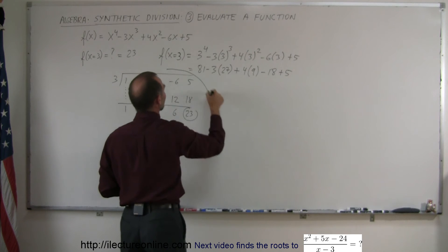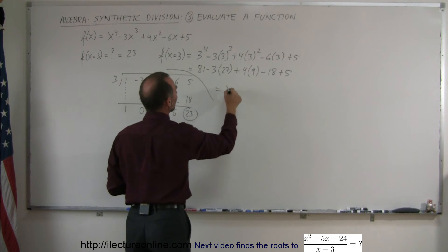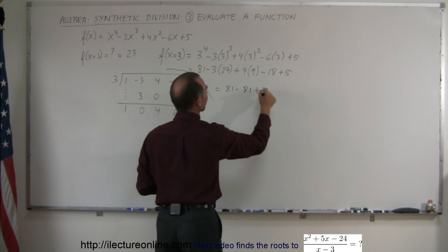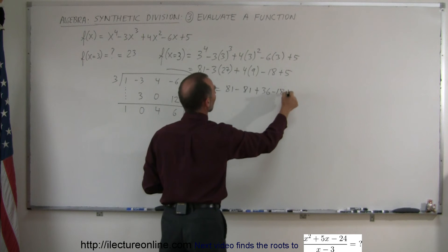Be careful here so we don't get confused. We have 81 minus 3 times 27, which is also 81. Then 4 times 9 is 36, minus 18, plus 5.